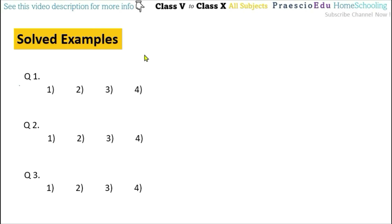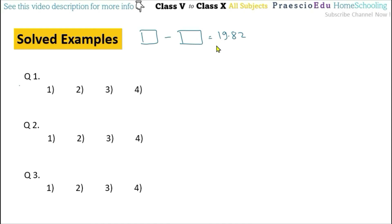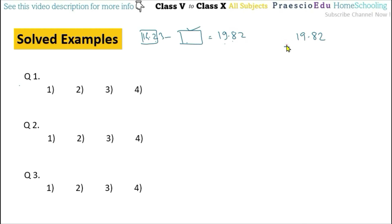Question number 1: the difference between two numbers is 19.82. So here one number is subtracted with another number and the difference we are getting is 19.82. If one of the numbers is 14.23, then what is the other number? To find out this number, we will make the addition. So 19.82 plus 14.23, we are getting 34.05. This is given in option number 1.